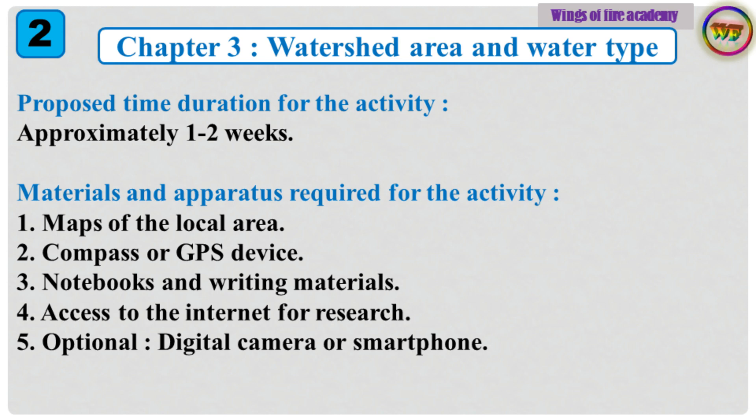Proposed time duration for the activity: Approximately 1 to 2 weeks. Materials and apparatus required for the activity: 1. Maps of the local area. 2. Compass or GPS device. 3. Notebooks and writing materials. 4. Access to the internet for research. 5. Optional — digital camera or smartphone.